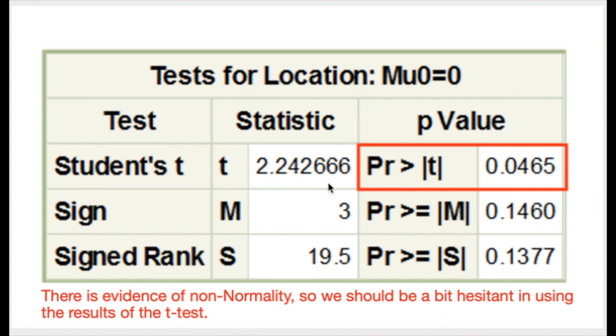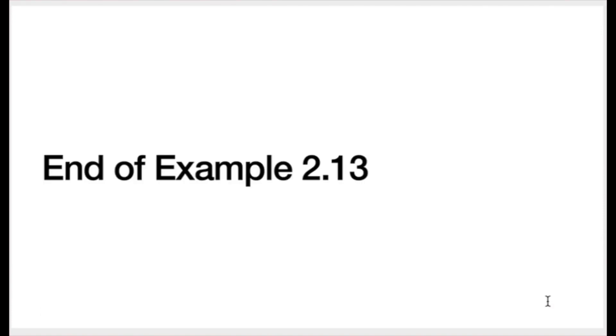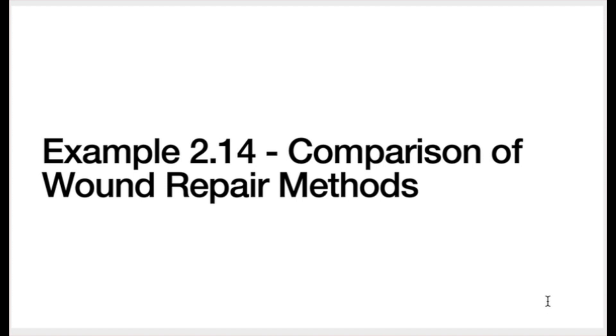Even though we're not using the t-test, we do have the sign test and Wilcoxon signed rank test available. That's the end of this first example. Now we're going to look at another real-world example: a comparison of wound repair methods.